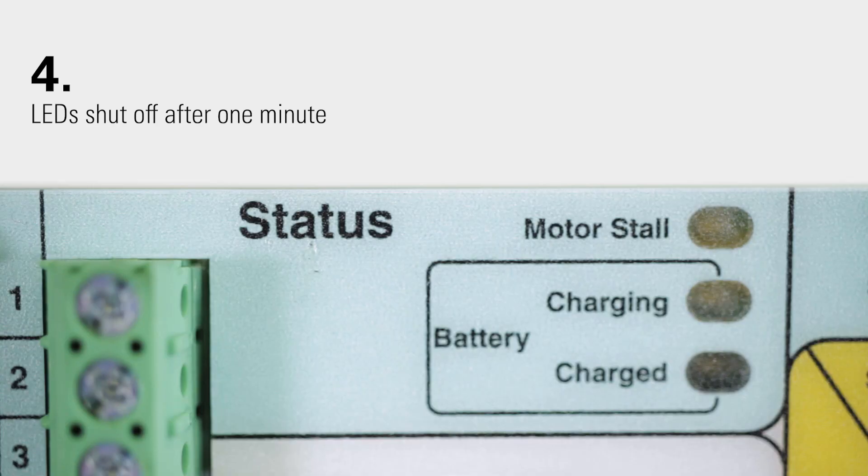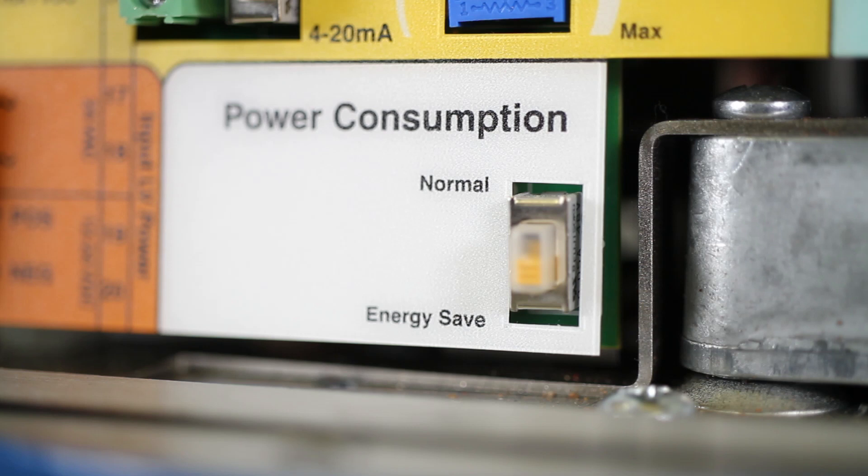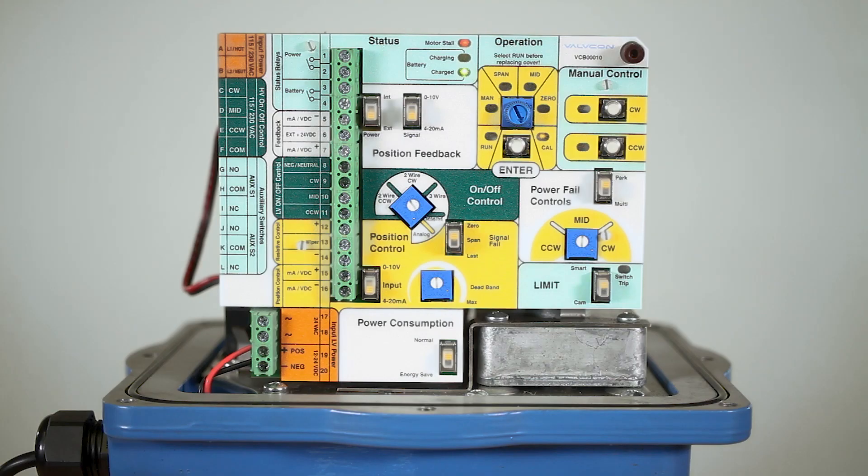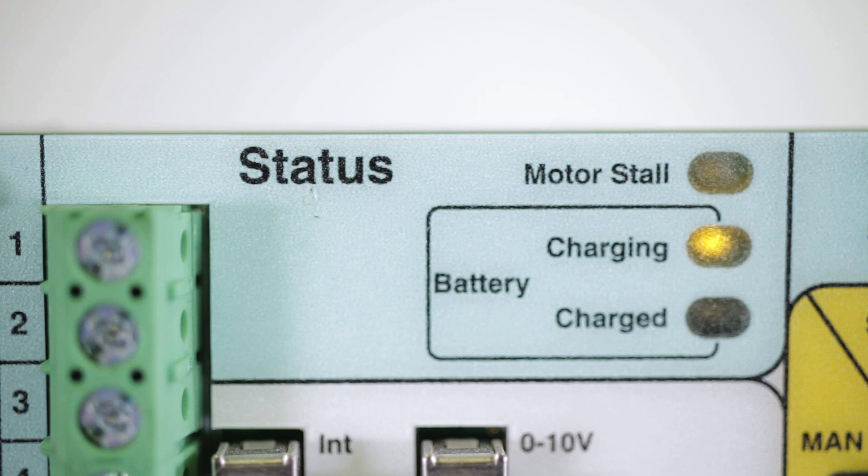If your LED is shut off after a minute, check to see if energy save mode has been selected. LEDs are turned off after one minute in energy save mode in order to reduce power consumption.